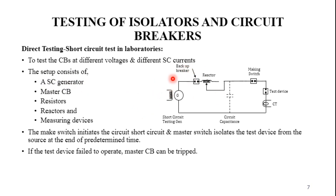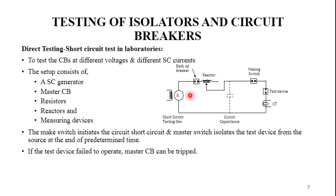The laboratory setup includes a short circuit generator, master circuit breaker, resistors, reactors, and measuring devices connected via CT and PT. The making switch initiates the short circuit, and the master circuit breaker isolates the test device from the source at the end of a predetermined time. Initially the making switch closes, transferring energy from the short circuit generator and reactor to the test device for both high voltage and high current testing. If the making switch cannot isolate, the backup breaker or master circuit breaker comes into action to isolate the circuit from the source.